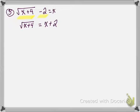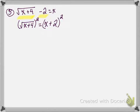Now we are going to use the power property and square both sides of this equation. When I square something that has a square root, it becomes just what is inside that square root. So when I square the square root of x plus 4, it simplifies to just x plus 4.